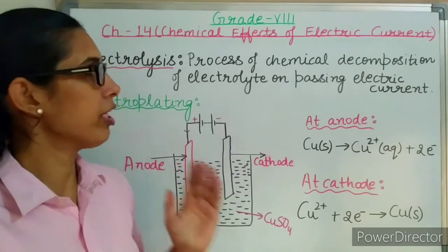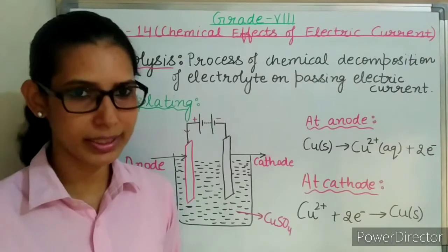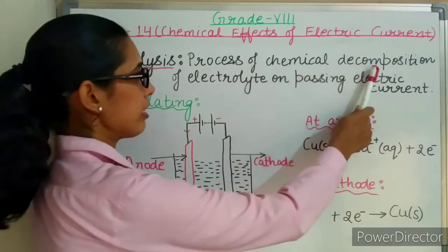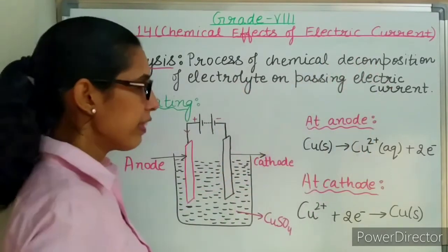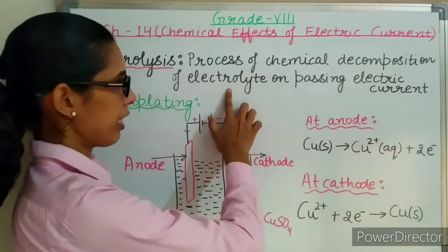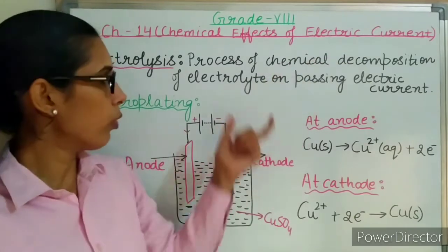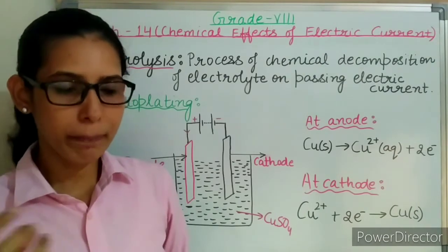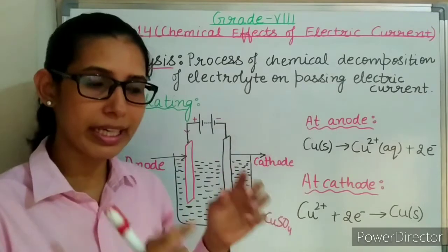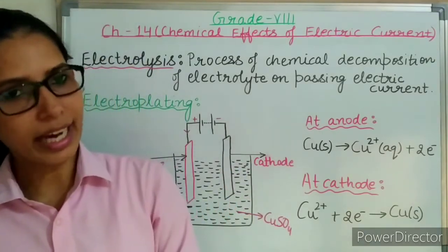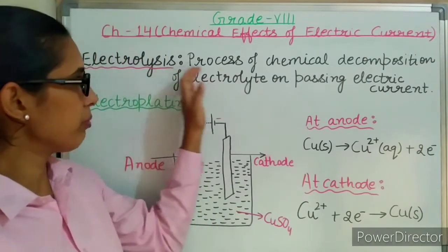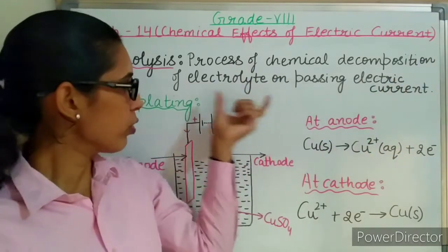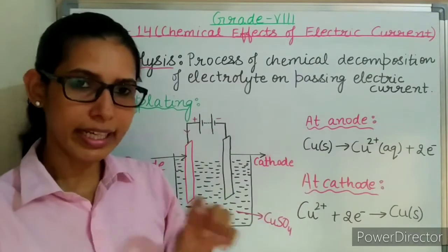Before understanding these chemical effects of electric current in detail, let us understand some important terms. First is electrolysis — the process of chemical decomposition of an electrolyte on passing electric current. That means on passing electric current through the electrolyte, it dissociates and decomposes. Electrolyte means any liquid or solution which, when electric current is passed through it, dissociates into ions and conducts electricity.